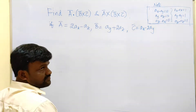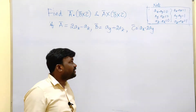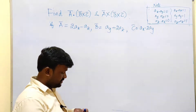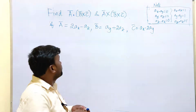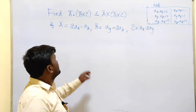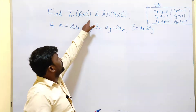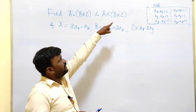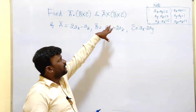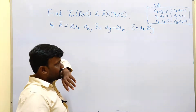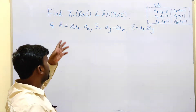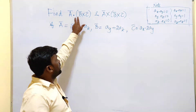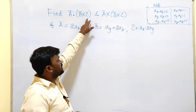Dear students, in this class we will solve a problem on scalar triple product — a bar dot (b bar cross c bar) — and vector triple product — a bar cross (b bar cross c bar). First we will solve the scalar triple product.